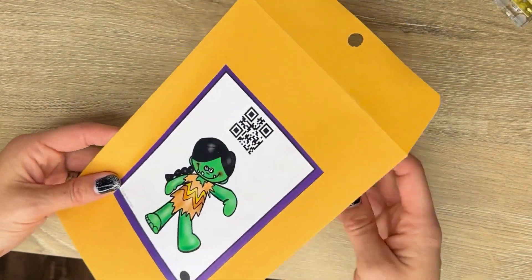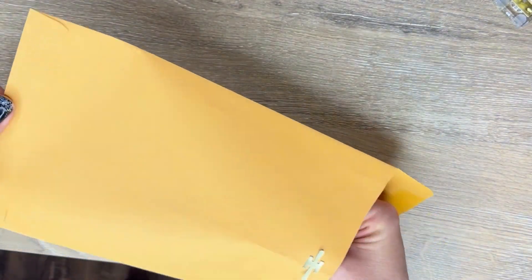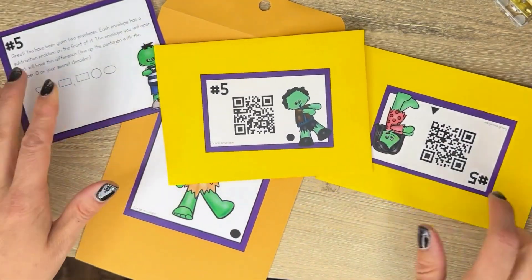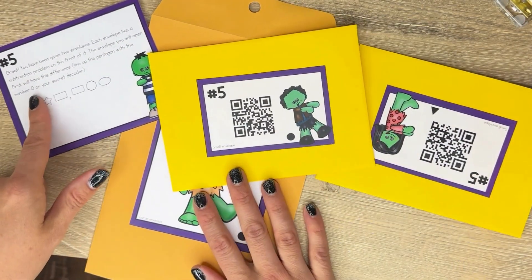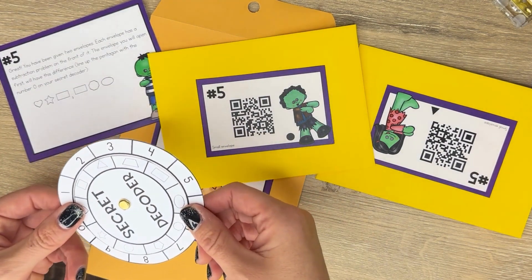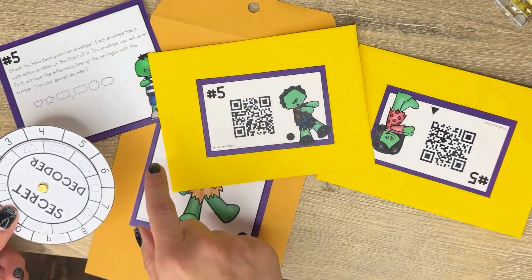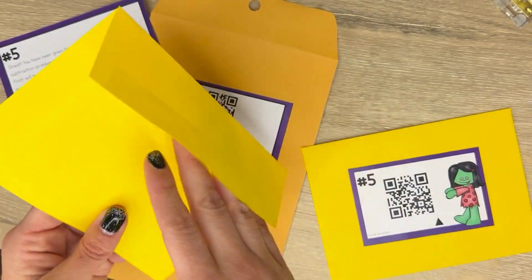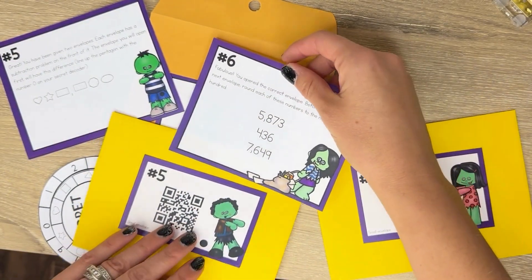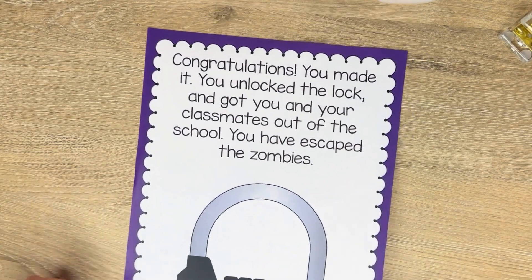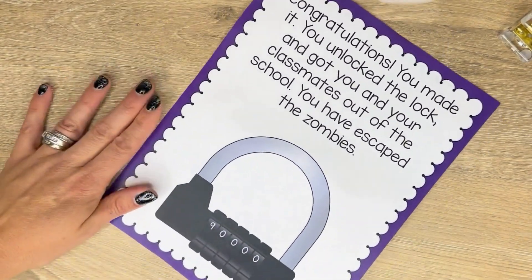Here's the next clue that they've found. This one was hidden underneath a math book. The students open it up and they decide which one they're going to open next by using their secret decoder. Then they'll go to the next clue. Eventually, students get the congratulations page and they've won the game.